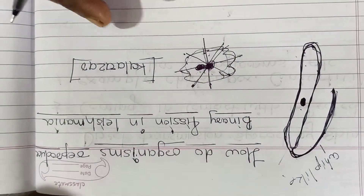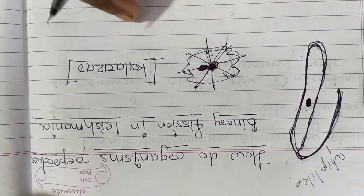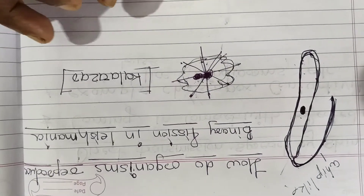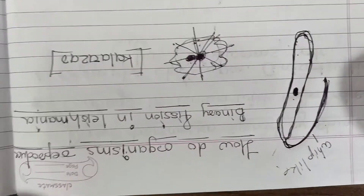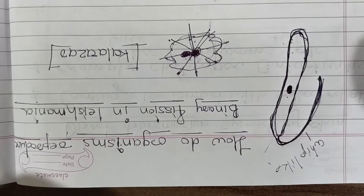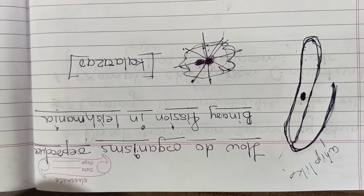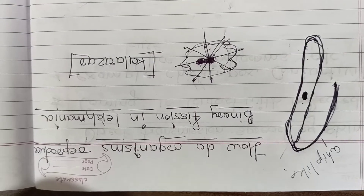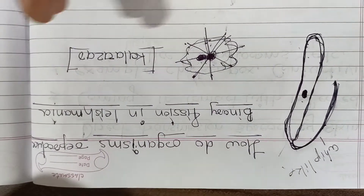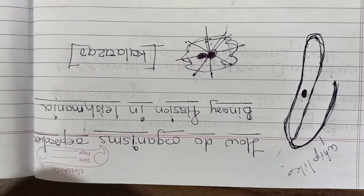Amoeba also causes one kind of disease — that is amoebic dysentery. But all amoebas are not harmful. There is one kind of amoeba which causes dysentery — the name of that amoeba is Entamoeba histolytica, which causes extreme diarrhea and dysentery. So Leishmania always causes Kala Azar — keep that in mind.